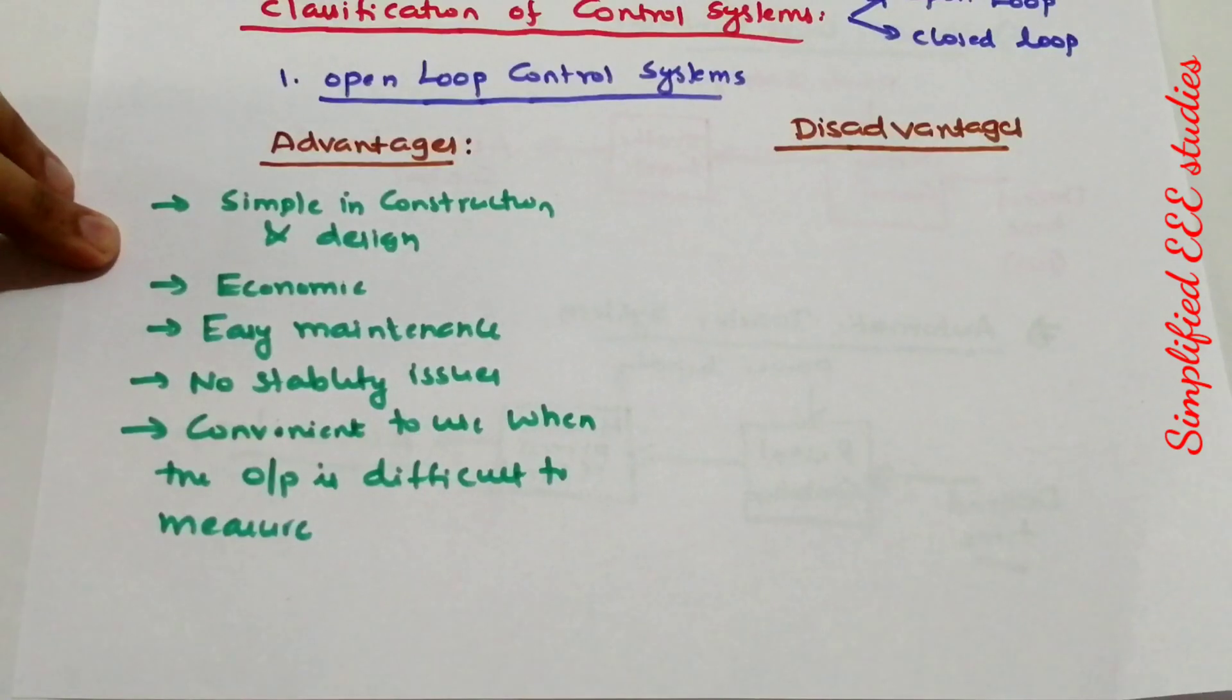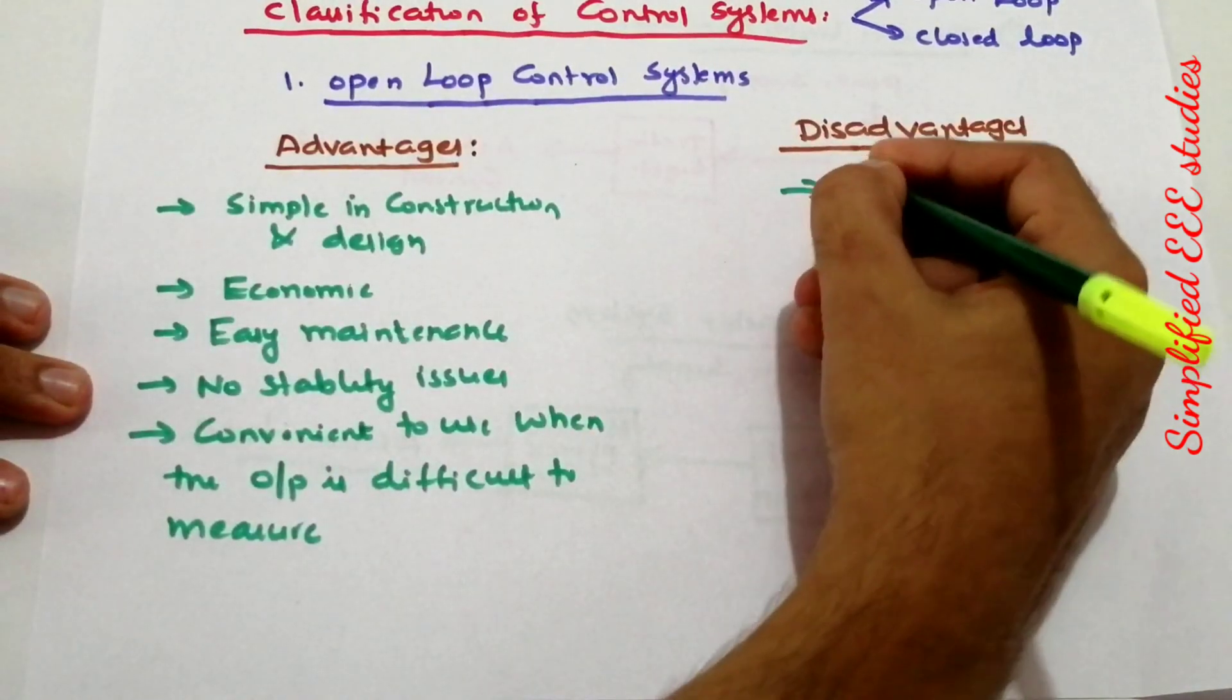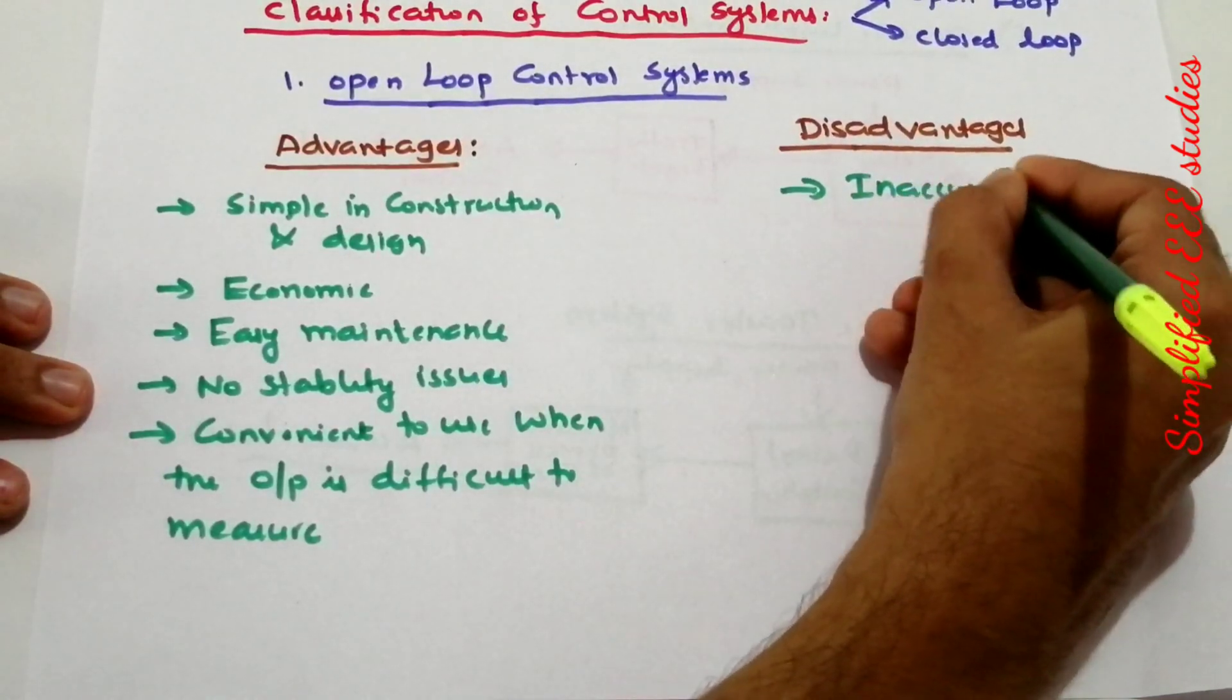These are the key advantages of open loop control systems. However, there are certain drawbacks. The first disadvantage is that they are inaccurate.